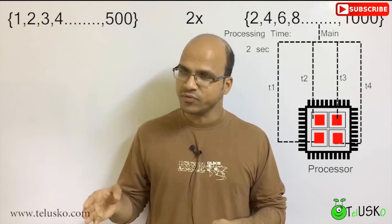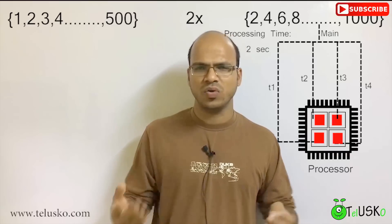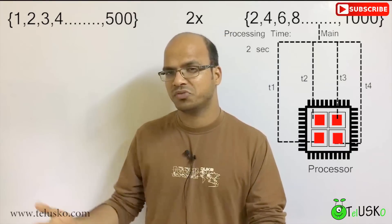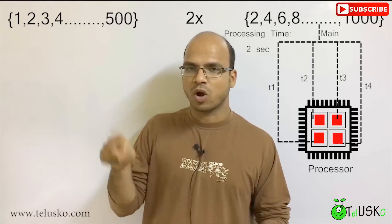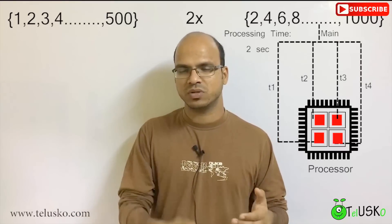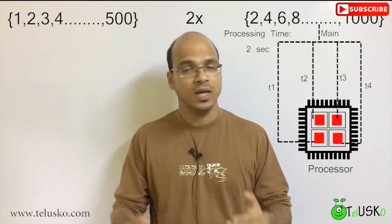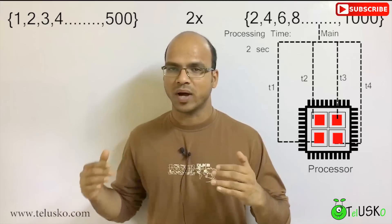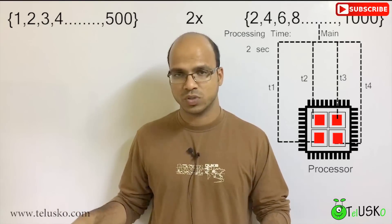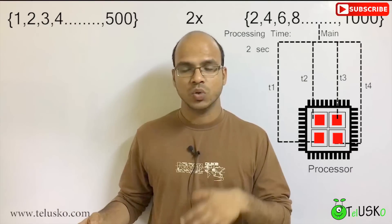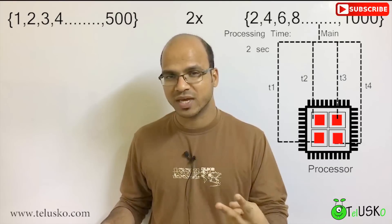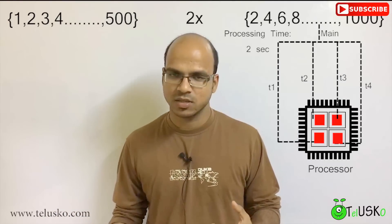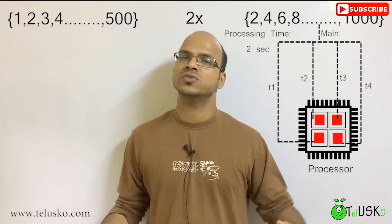If you want to use all four cores you have to use four threads. By default we have only one thread which is main, so we create three extra threads — t1, t2, t3, and t4. Since all these threads work at the same time on four different cores, you can complete the same task in two seconds instead of eight. That's the power of multi-threading.